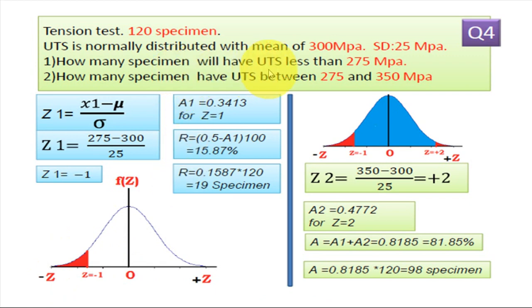So rejection, the specimen having strength less than 275 MPa, so R is equal to 0.5 minus A1, that is rejection equal to 0.5 minus 0.3413. So that comes 15.87%. So number of pieces equal to 0.1587 into total specimen 120. So total 19 specimen having ultimate tensile strength less than 275 MPa.